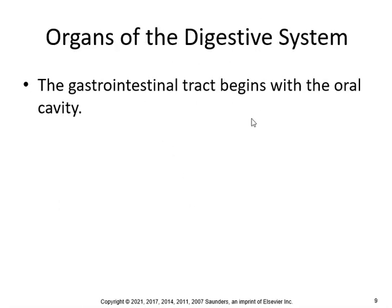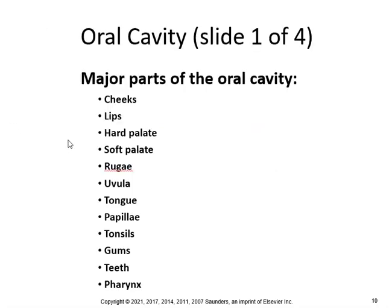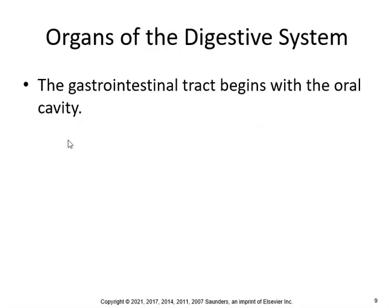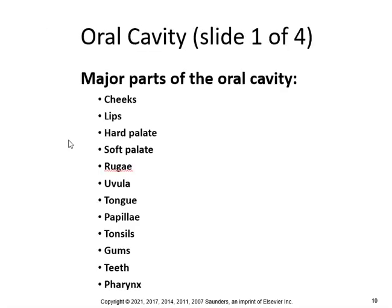The GI tract begins with the oral cavity. The major parts of the oral cavity include: cheeks, lips, hard palate, soft palate, the rugae, the uvula, the tongue, the papillae, the tonsils, the gums, the teeth, and the pharynx.